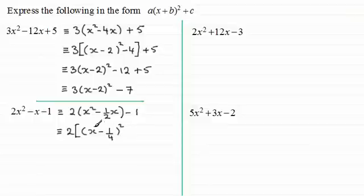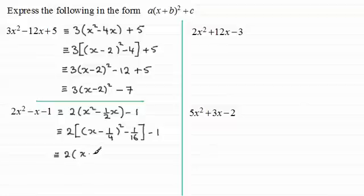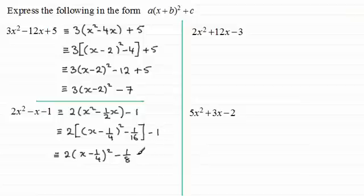Squaring this out gives x squared as the first term, then minus a quarter x minus another quarter x which is the minus half x, and then minus a quarter all squared which is plus one sixteenth. So we need to subtract that one sixteenth off and close the square bracket. Inside the square bracket, when expanded, that gives us just x squared minus half x. Then we expand the square bracket, multiplying the two terms by 2. So we get 2 times x minus a quarter all squared. Two times minus one sixteenth is two sixteenths, which reduces to minus one eighth. Don't multiply the minus 1 by the 2 — it's just minus 1.